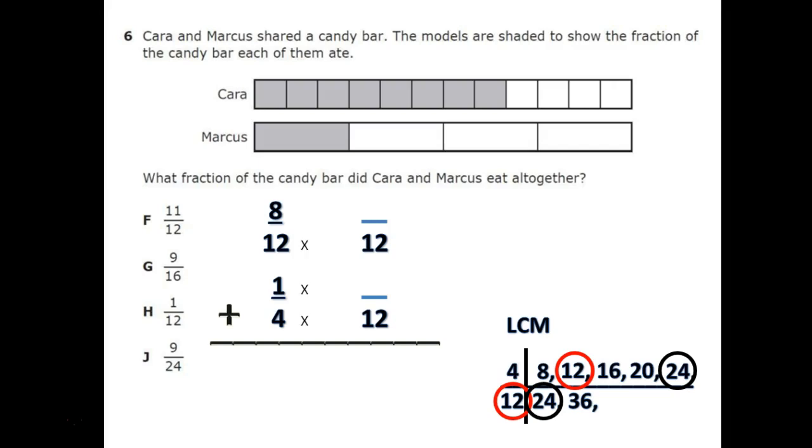Now, since I changed my denominators, I'm also going to have to change my numerators. And you use that using multiplication. You ask yourself, starting from the bottom here, 4 times what is 12? 4 times 3 is 12. Whatever you do to the bottom, you're going to do to the top. 1 times 3 is 3.